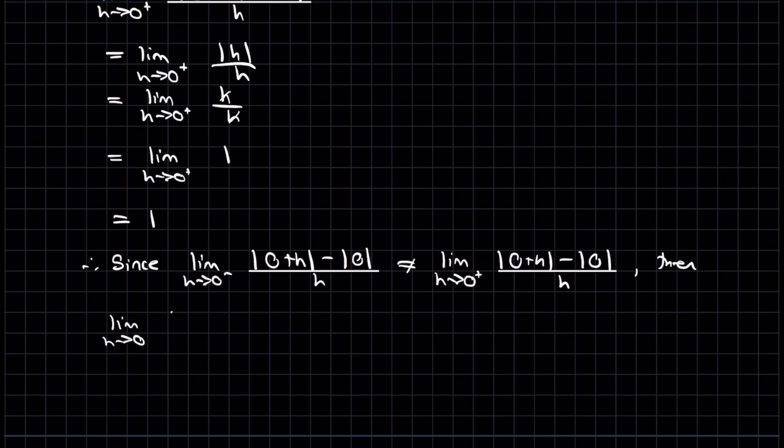the 2-sided limit, again of the same difference quotient, this does not exist. And if that limit doesn't exist, well then it can't be differentiable at x equal to 0.